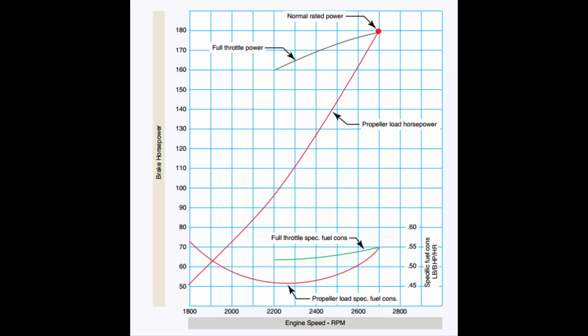So let's start here at the 2,300 RPM line. We're going to take this up until it intersects this propeller load horsepower curve. From here where we hit the curve, we're going to go to the left and read horsepower. We're going to go straight to the left and read the horsepower at 2,300 RPM, and our answer is 110.